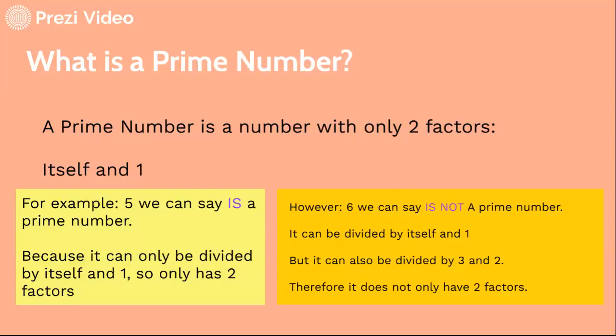However, 6 we can say is not a prime number because it can be divided by itself and one, but also it can be divided by 3 and 2. Therefore, it does not only have two factors.